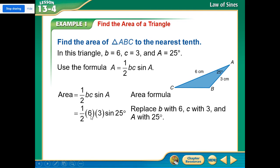One half, six times three, so one half of six is three, times three is nine, times the sine of 25, gives you 3.8. So the area of that triangle is 3.8 square centimeters.